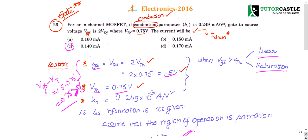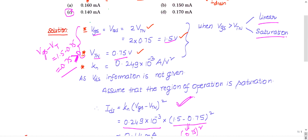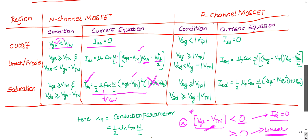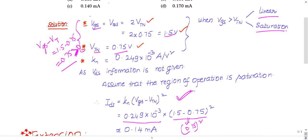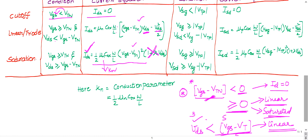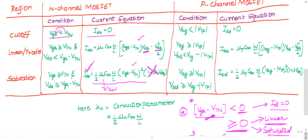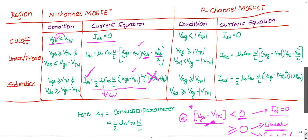If you remember the current equations for N-channel MOSFET in cutoff, linear, and saturation regions, you can solve any question based on this. Take a screenshot of the formulas shown at the start of this video or note them down. In this way you can calculate the current of any MOSFET based on its region of operation. Please comment, like, and subscribe. Thank you.